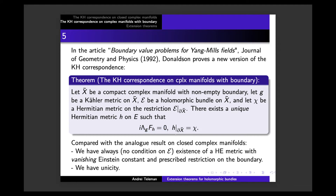Compared with the analogous result on closed manifolds, there are important remarks to make. Donaldson explained that the result appears stronger. First, existence holds always — there is no stability or polystability condition required on E. Second, we can always impose the constant to be zero, and we can prescribe the value of H on the boundary. Moreover, we have uniqueness, which is not true on closed manifolds.